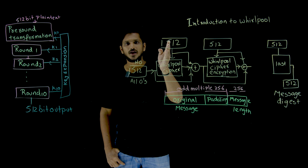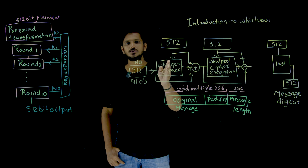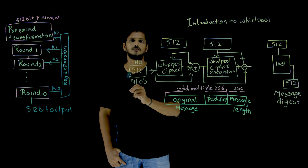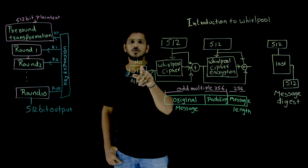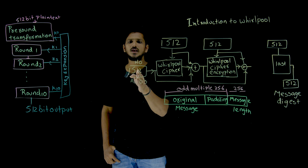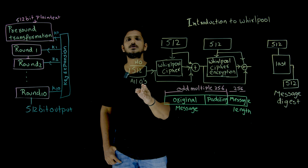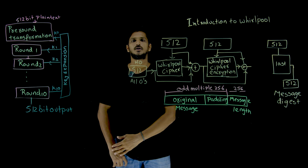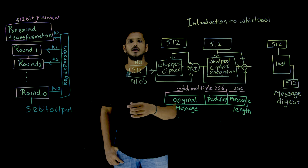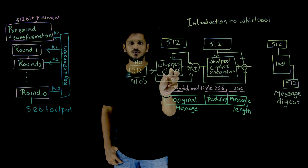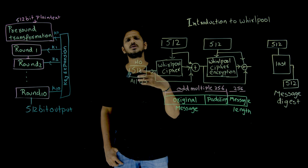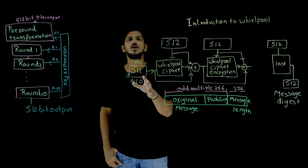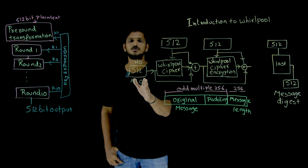Along with the 512-bit plain text, it also takes a 512-bit key as input. For the initial round, the key is considered as all zeros — this 512-bit key is called H-naught. For the first round it is all zeros, though during implementation you can also assign some constant value.